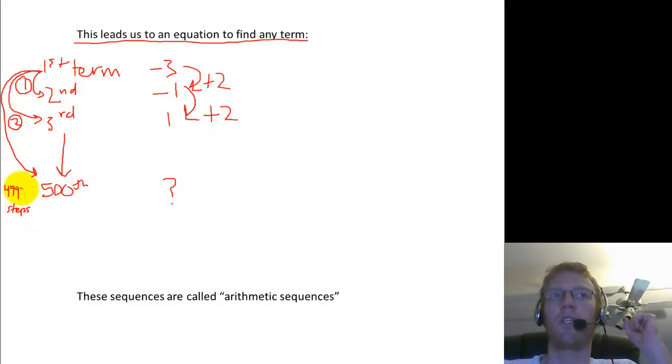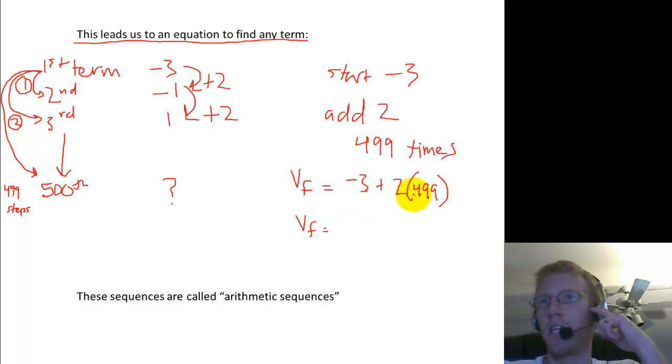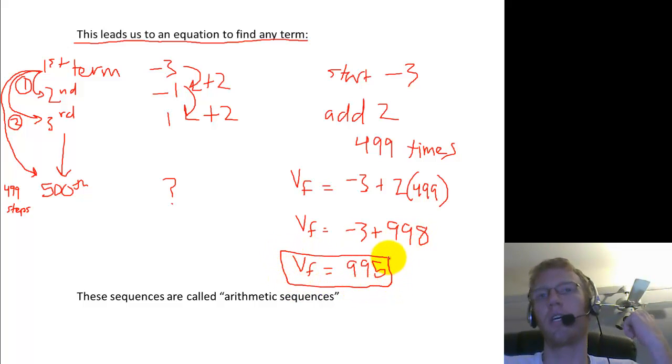Okay? So we're going to add 2 each time. And how many times are we going to do it? 499. So we started with negative 3. Then we added 2 499 times. So that our final value is going to be negative 3 plus 2 times 499. Okay? And then we can work this out. Final value. Order of operations says we should do this multiplication first. So 499 times 2 is what? 998 negative 3 plus 998. So our final value corresponding to the 500th term should be 995 if you add those two together. So you can see right away that's much quicker than if we just tried to count by 2 so many times.